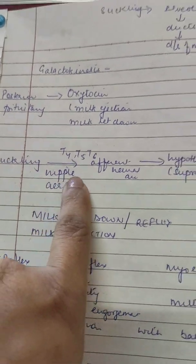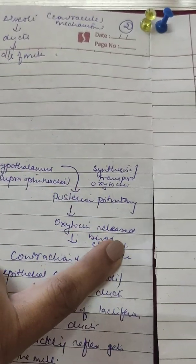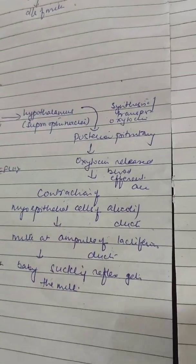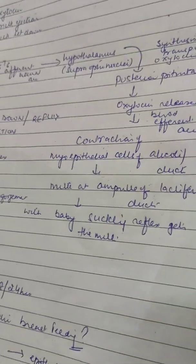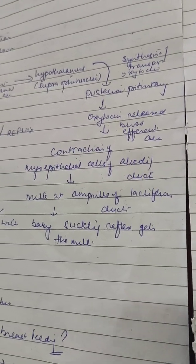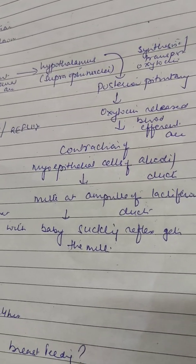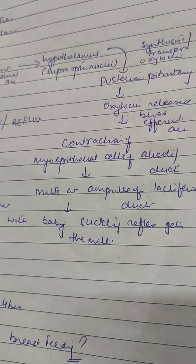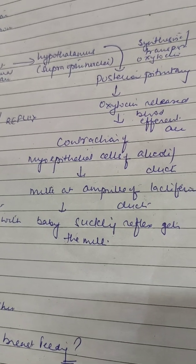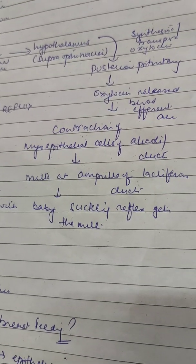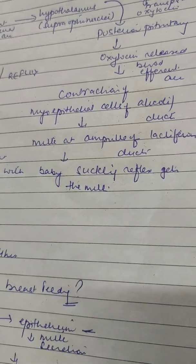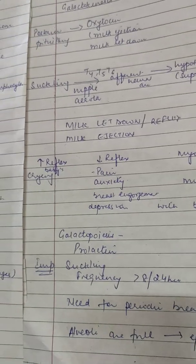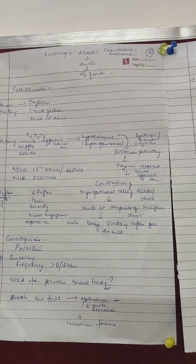The posterior pituitary then releases oxytocin into the blood. This is the efferent arc — oxytocin causes contraction of the myoepithelial cells of the alveoli, releasing milk stored in the alveoli into the ducts, then to the ampulla of the lactiferous duct and out through the nipple so the baby can suck the milk. This is called the milk let-down reflex arc.